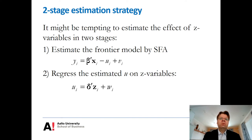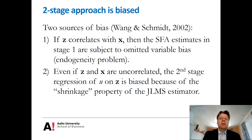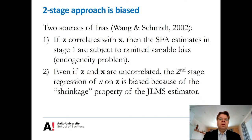However, there are at least two major problems in this kind of two-stage approach, following the paper by Wang and Schmidt in the Journal of Productivity Analysis in 2002. Firstly, one problem is that if these Z variables correlate with the inputs X, then in the first stage — because these Z variables also influence the output — our SFA estimator is biased because we have these omitted variables. Because we have omitted those Z variables that should be in the model, our beta coefficients for the inputs would be biased. This is the well-known omitted variable bias.